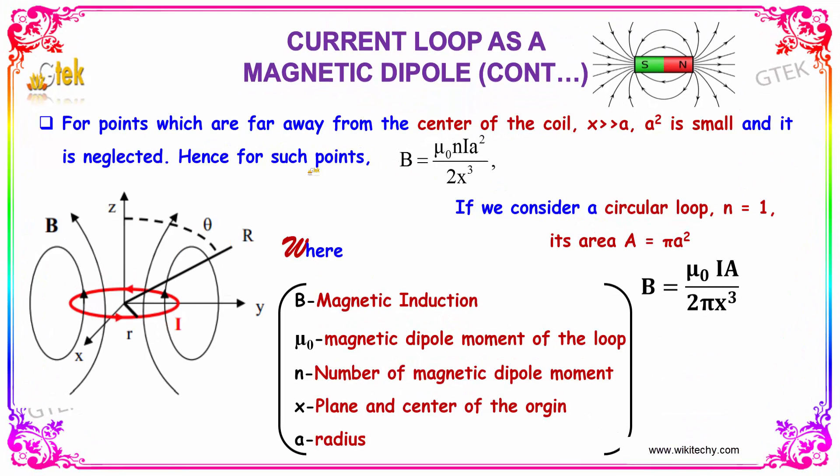For points which are far away from the center of the coil, x is greater than a, a² is really small and it is neglected. Hence, for such points B equals μ₀nia² divided by 2x³.